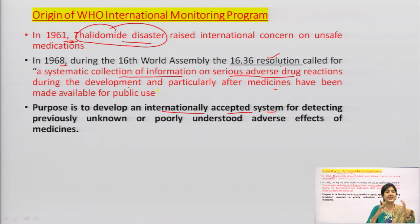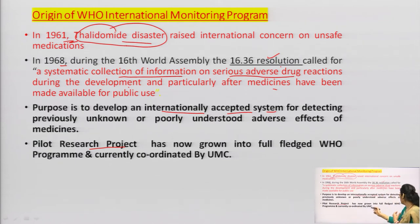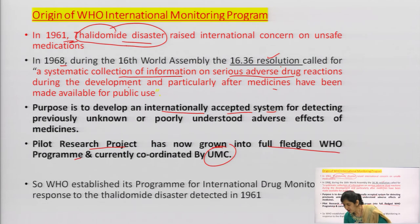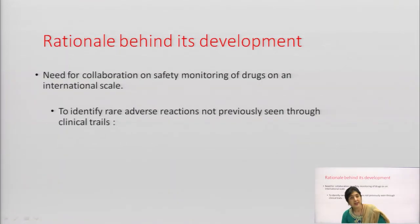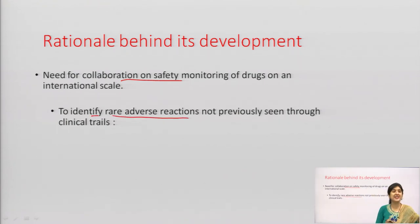The purpose was to have a system that could detect adverse reactions. This was a pilot project, and it is now fully grown into a full-fledged WHO program coordinated by UMC, the Uppsala Monitoring Centre. WHO established this program for international drug monitoring in response to the thalidomide disaster detected in 1961. The second rationale was the need for collaboration and safety monitoring of drugs on an international scale, to identify rare adverse reactions which were not seen during clinical trials.